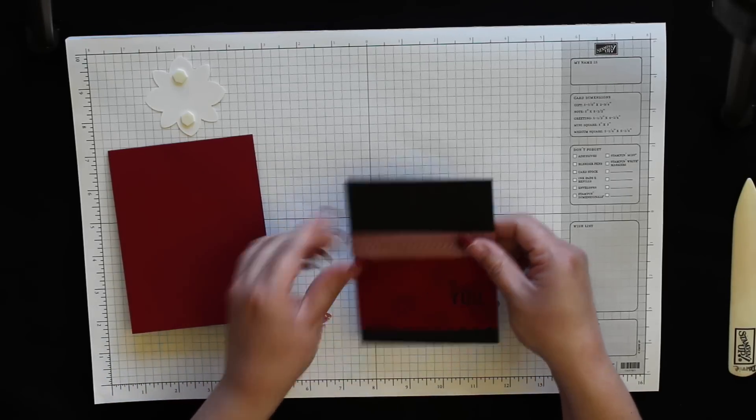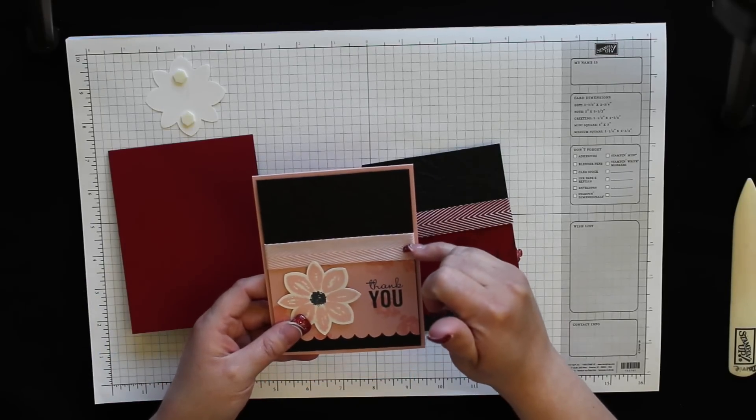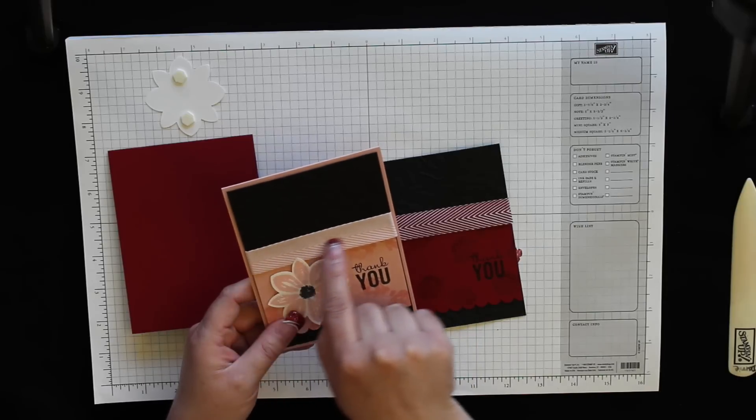And for some of the lighter colors, like when I was doing the blushing bride, you can see where the top of the cardstock is. So I try to just line the top of the cardstock up right there with the center of the ribbon.